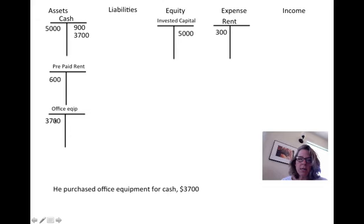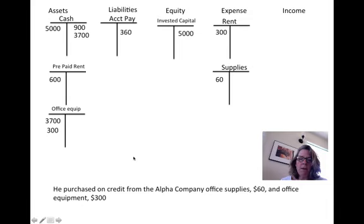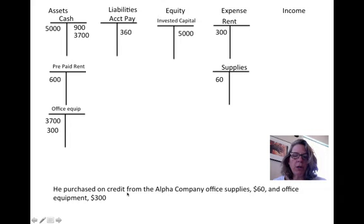Next, he purchased from Alpha Company office supplies of $60 and office equipment of $300. We assume the supplies are used up in that particular month. He purchased on credit, meaning he didn't pay cash, so we now have an accounts payable of $360. $300 went into office equipment — again, it's long-term — and $60 was expensed during the period for office supplies.